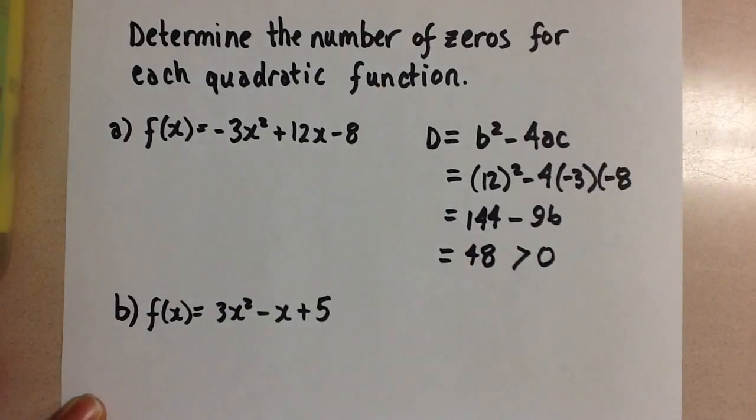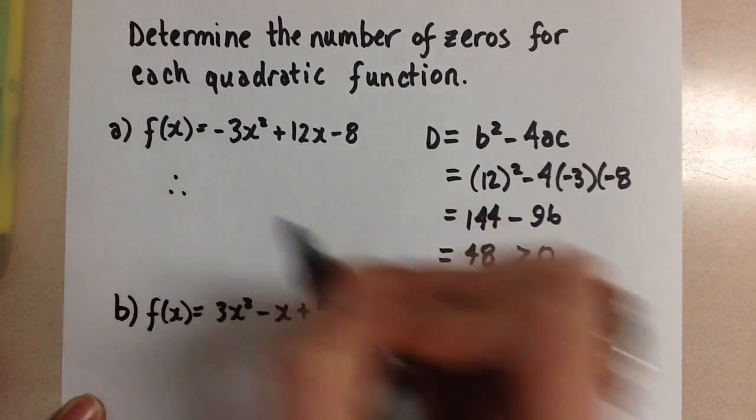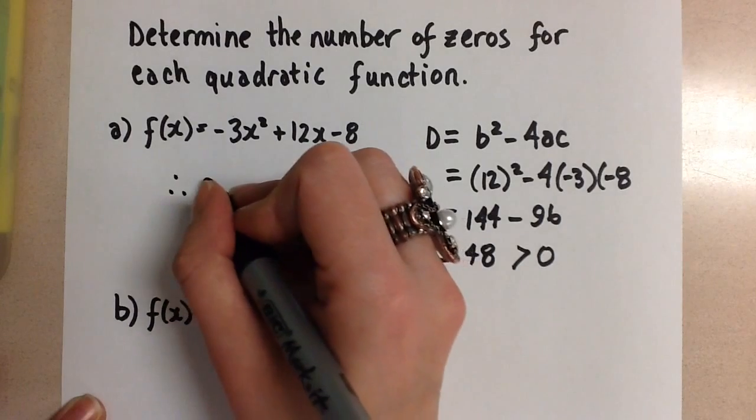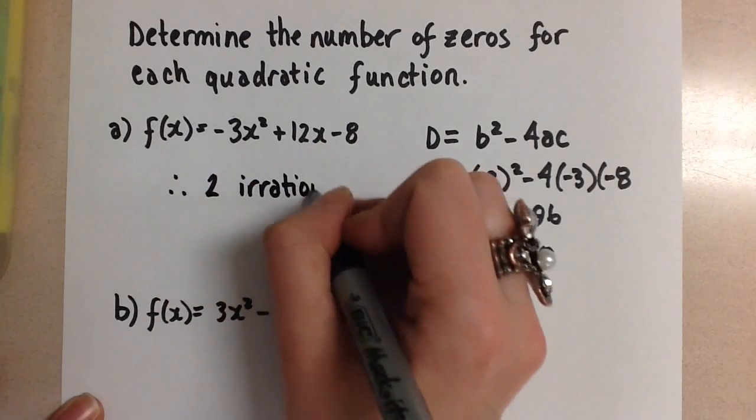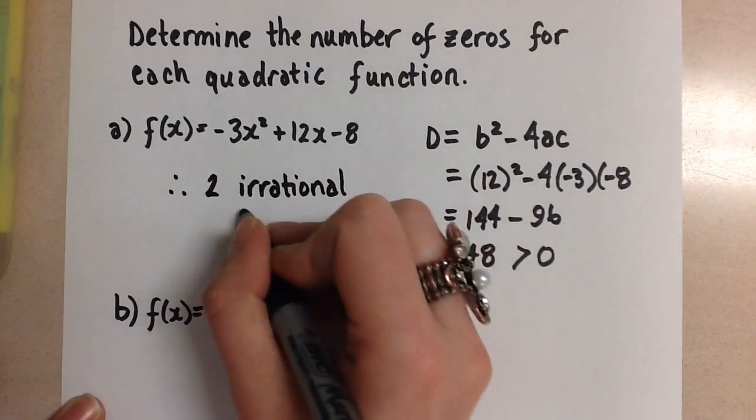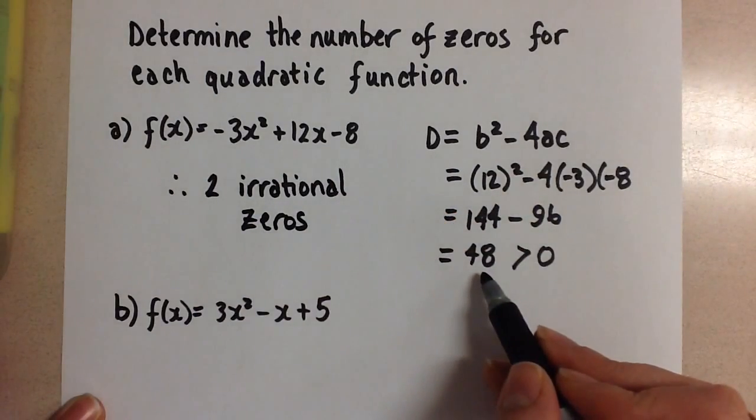When you have a discriminant that is greater than 0, this means that we have two irrational roots. If this number under the radical were a perfect square, then we would have rational zeros.